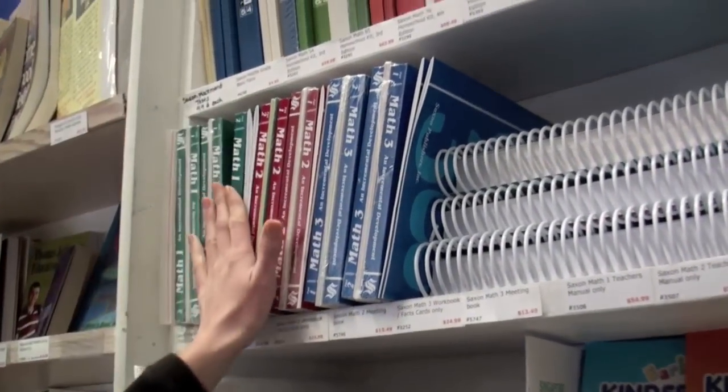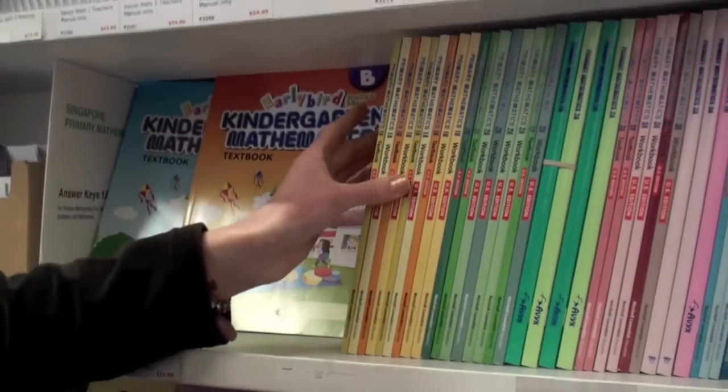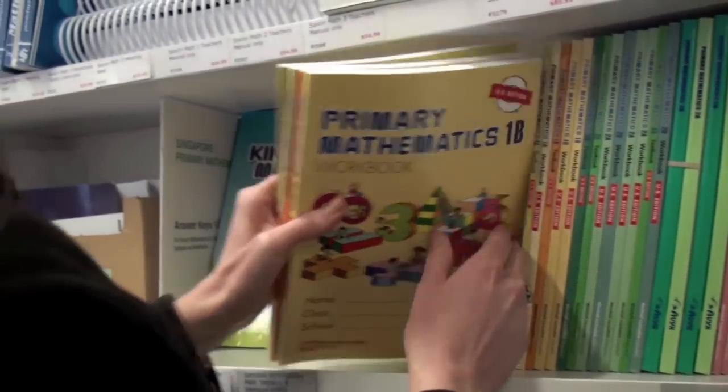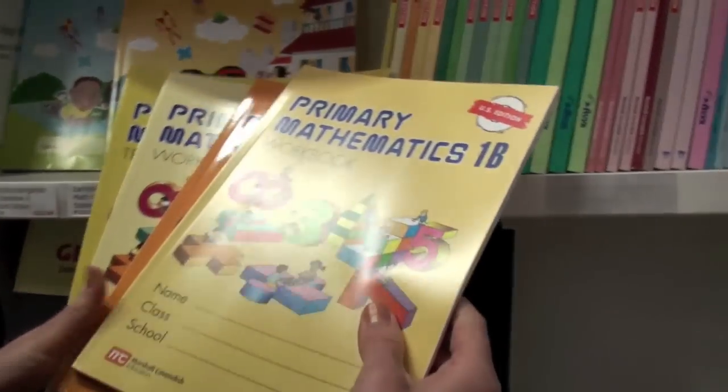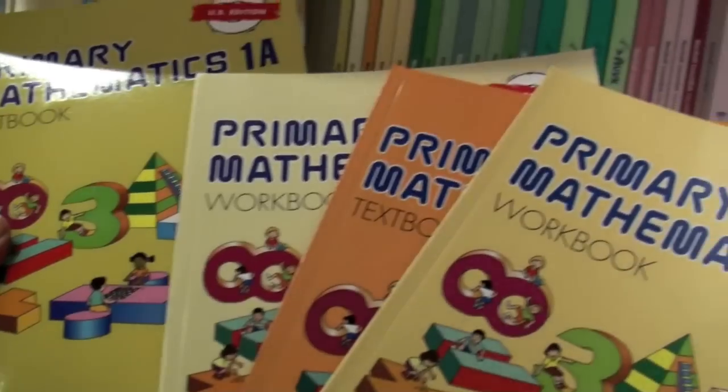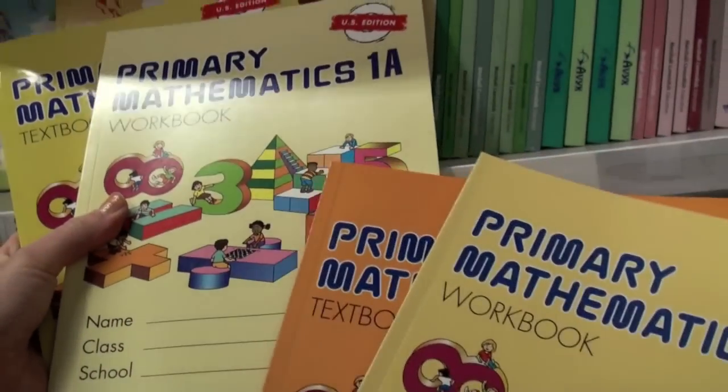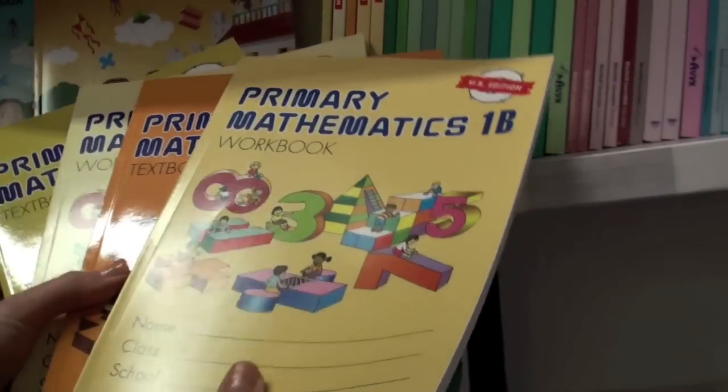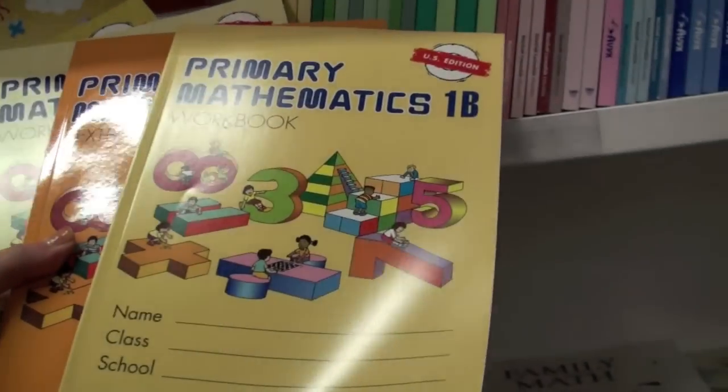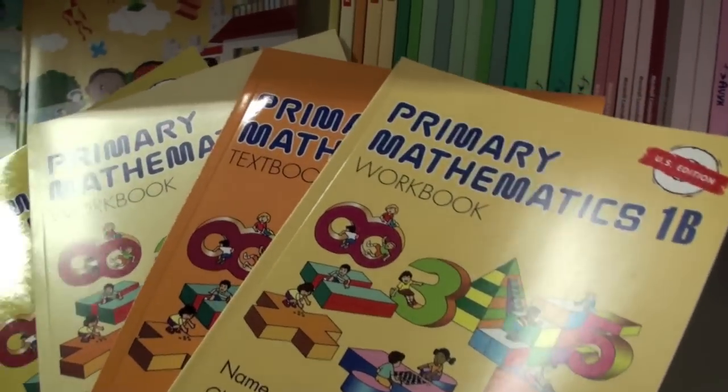Now let me show you Singapore. Singapore has four books that constitute one year: two textbooks and two workbooks. Textbook 1A, workbook 1A, textbook 1B, and workbook 1B. These four constitute the first grade math curriculum.